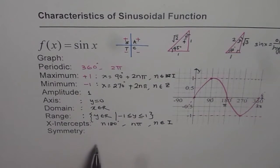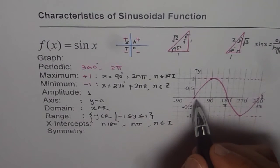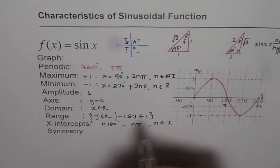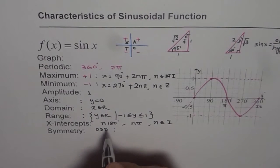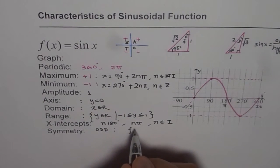As far as symmetry is concerned, it is symmetric about origin. So it's odd symmetry. Now how do you know it is odd symmetry? What is f of minus x?